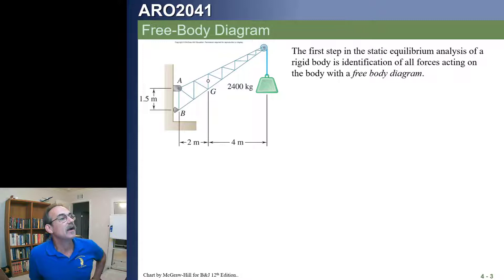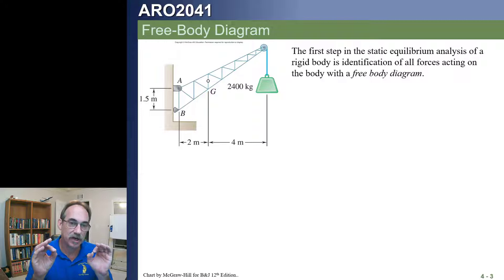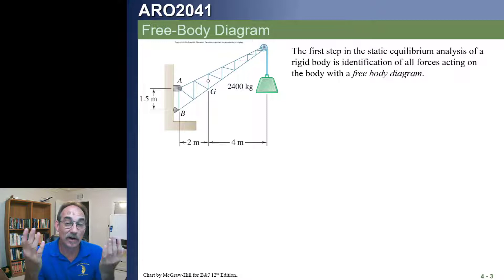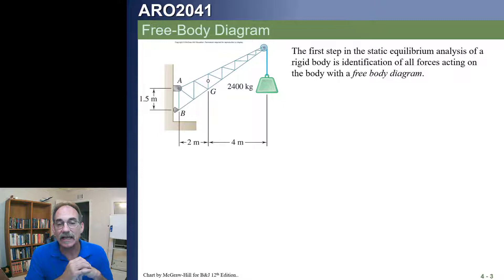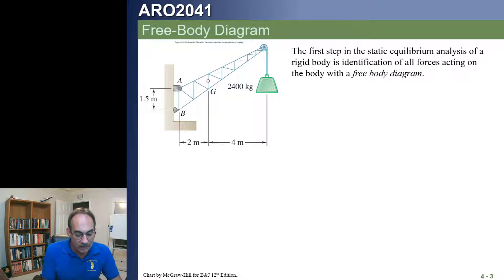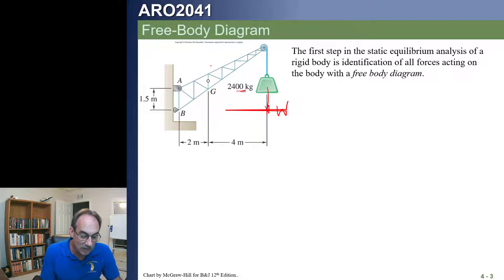Let's look at a simple problem from Beer and Johnston's text. Here we have a crane. As engineers, we need to start developing the judgment to quickly break this down into relevant pieces of information. We see a structure here — we're in statics, not strength of materials class. What we're dealing with is the external forces and what internal forces they cause. We can see the mass of this weight hanging down, which is going to cause a force equal to m times g.